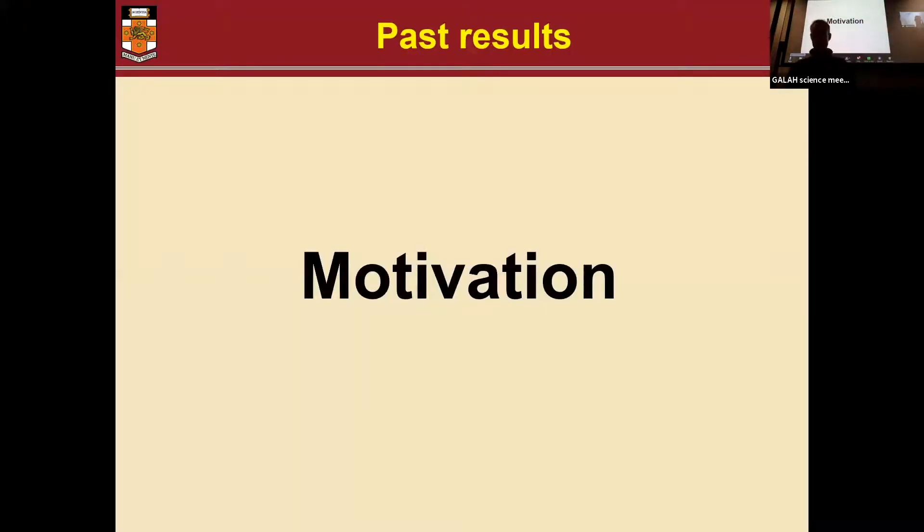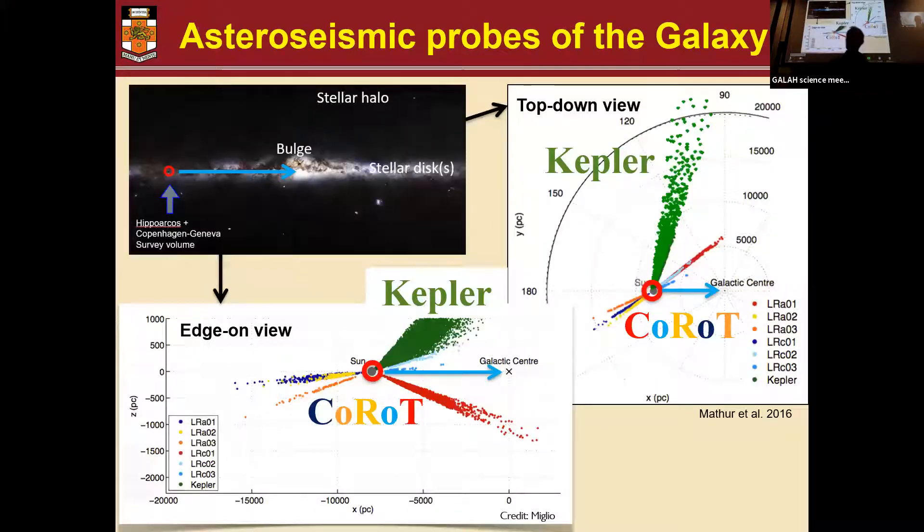Why does this really matter? It's because we know from previous missions like Kepler, K2, and COROT that we can use asteroseismology of red giant stars to probe very far into the galaxy.